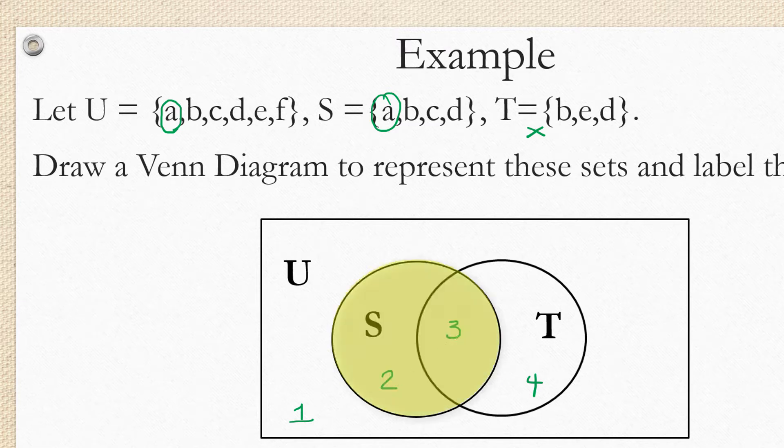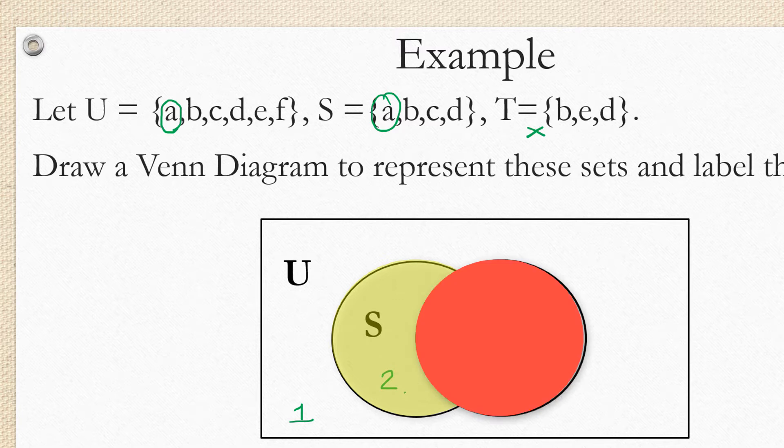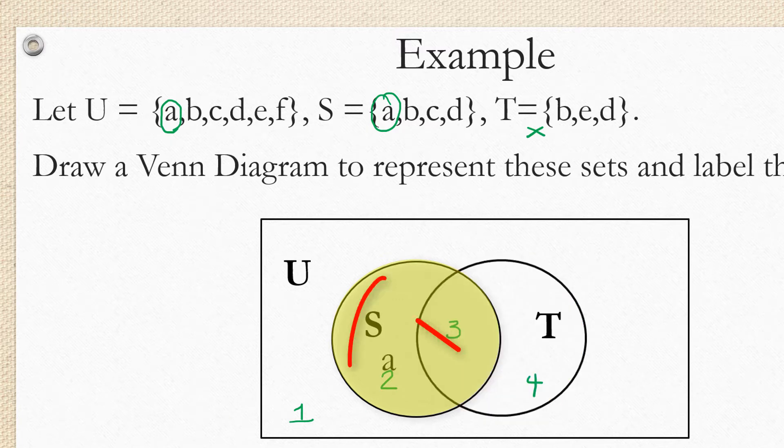Well, the only two regions in S are regions 2 and 3, but region 3 is in T. So we have to put A into region 2, where it's in S, but not in T.